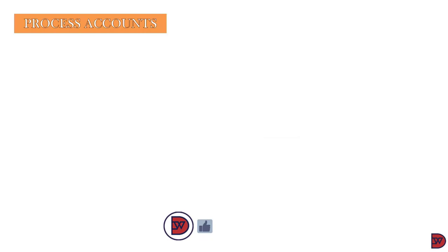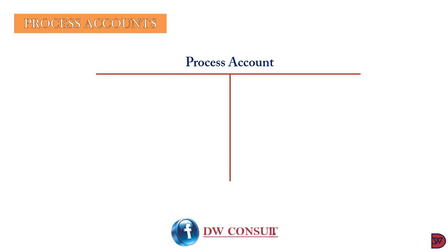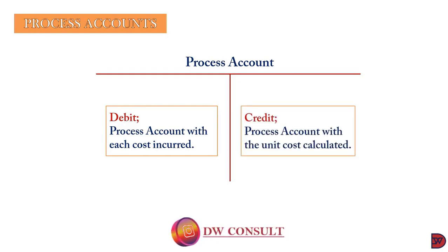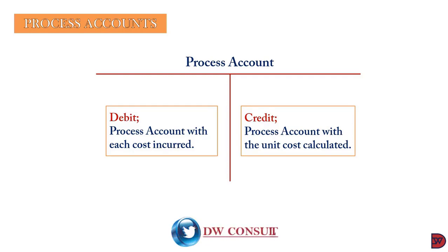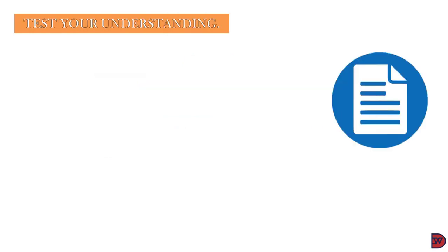Let's come to process accounts — the T-account for process costing. The process account is needed to depict the inflow and outflow of units. The cost incurred is debited to the process account, while the cost of the output to be transferred out of the process is credited. It is important to have two segments: one side for the units and the other for the amount, on both sides of the account.